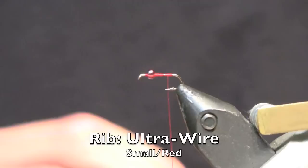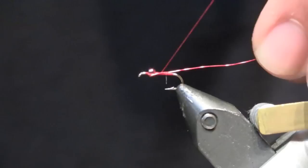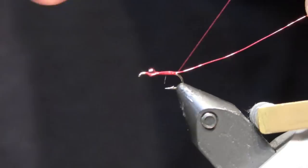We're then going to be using Red Small Ultra Wire. And I like to wrap it all the way down the hook shank just to give it a little bit of body and to help it sink a little bit faster. You want to tie it all the way back to right where the bend starts.